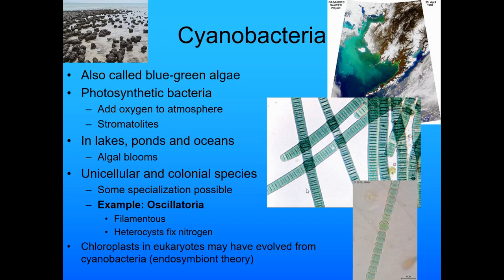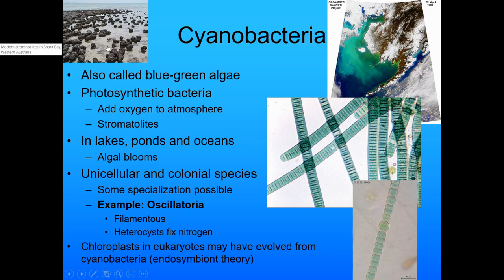Moving on to a couple of other types of bacteria: the cyanobacteria, also called blue-green algae. They're green, which means they're photosynthetic, which means they add oxygen to the atmosphere. They can also form structures visible with the naked eye — these are stromatolites, which are cyanobacteria that have dried over many years. You can find them in lakes, ponds, and even oceans. Here's a picture of an algal bloom, I think in the Bering Strait. There can be unicellular or colonial species — this example here is Oscillatoria, a filamentous colonial species where each little division is a single cell.